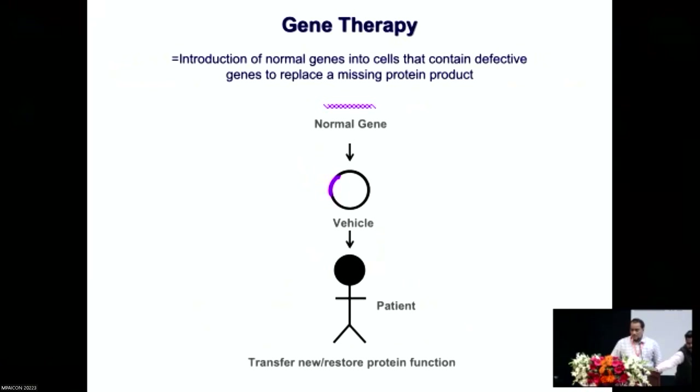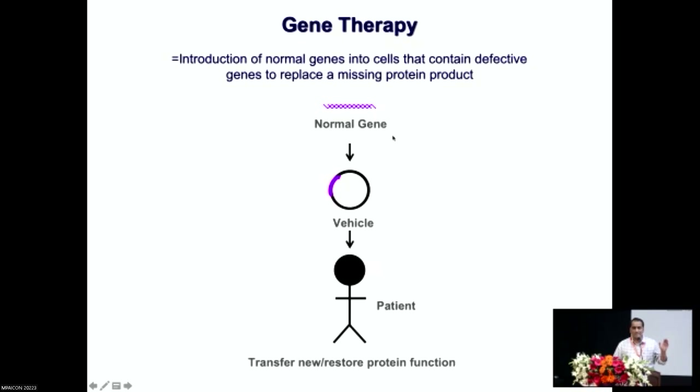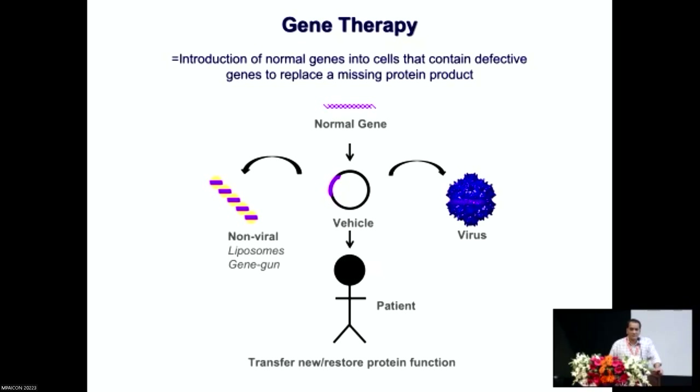The term gene therapy refers to the introduction of a normal copy of a gene into a patient with a genetic disorder, so as to replace the missing protein function. The concept is very simple. The issue is: how do you deliver these normal copies of genes? There are a variety of methods possible to transfer these normal copies of genes, and viruses are known to be most efficient, simply because they have evolved over several thousands of years to infect specific tissues in the human body.